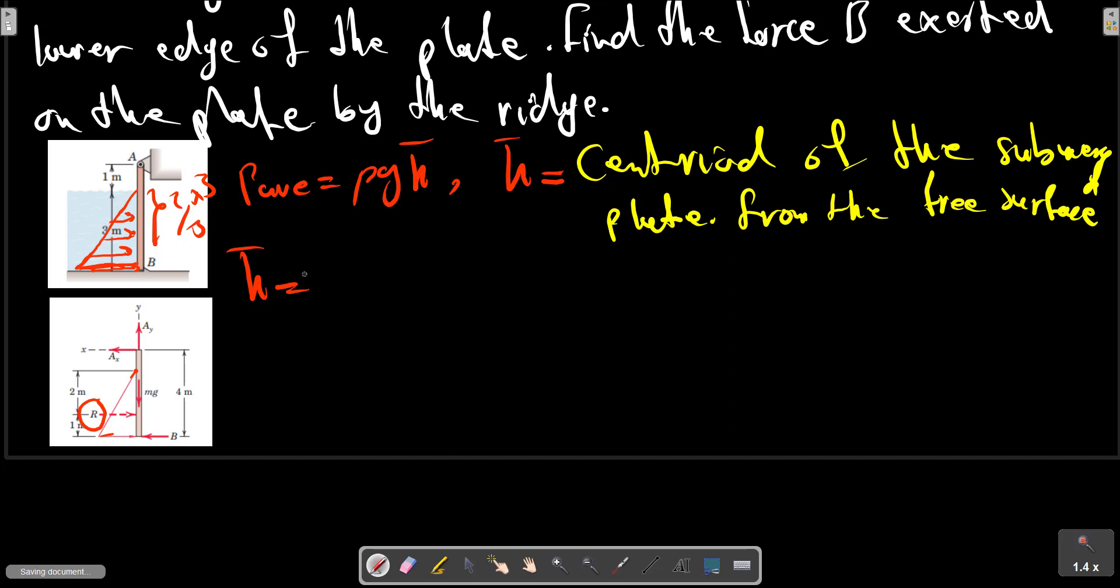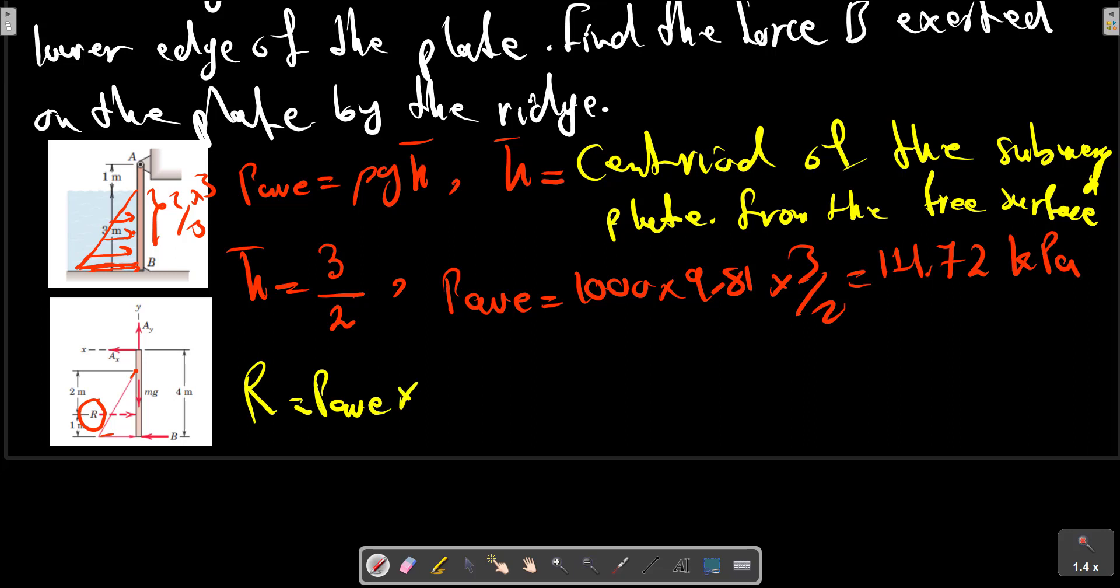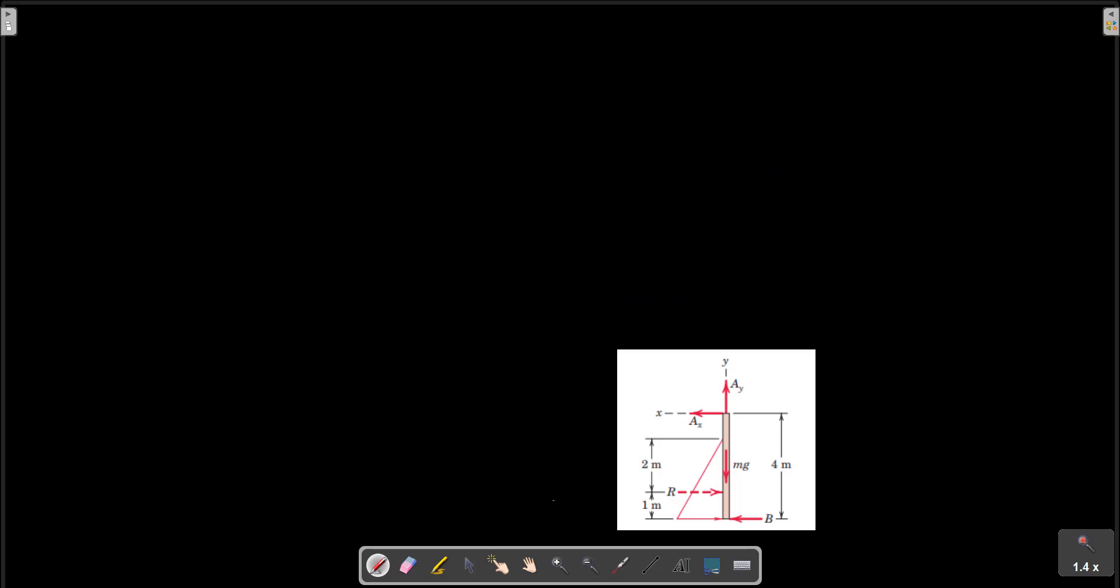H bar equals to 3 on 2. So P average equals to rho of water times 1000 kilopascal. The resultant is R equals P average multiplied to the area. The area is 3 multiplied by 6. The resultant is 14.72 kilonewtons.